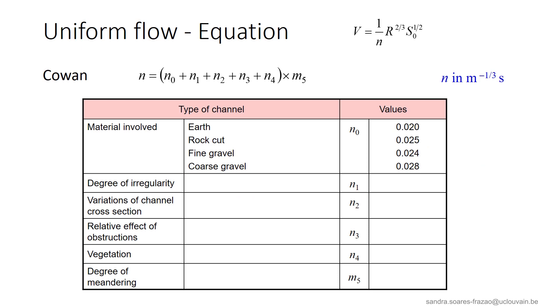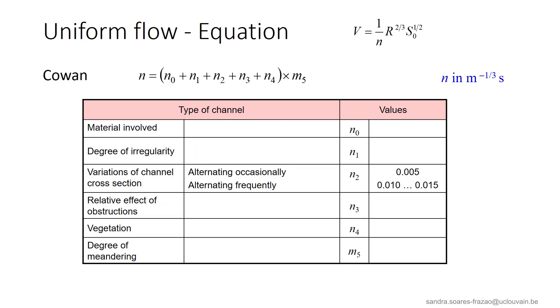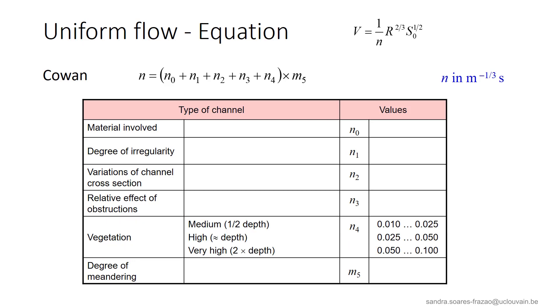Cowan developed a methodology to estimate the Manning coefficient of a river as a combination of different values. First, the material involved should be identified. Then, the degree of irregularity of this material. The variations of the channel cross-sections are also considered. Frequent changes in the channel cross-section will induce local head losses, that are accounted for by an increase in the friction coefficient. The relative effect of obstructions present in the channel are also accounted for. And the presence of vegetation is another factor that can increase the global friction coefficient, as very high vegetation in the flow can reduce the velocity significantly.